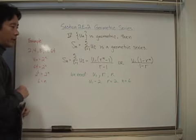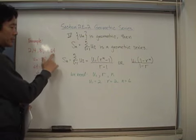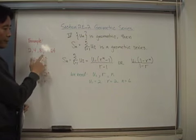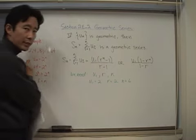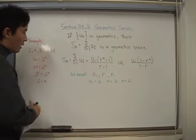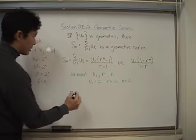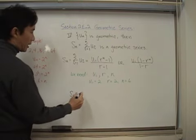Given this information here, we can now go ahead and find the sum or the series of the first 6 terms of this particular geometric sequence. So let's go ahead and start. So s, now how many terms are we adding up? We're adding up 6 of these terms.